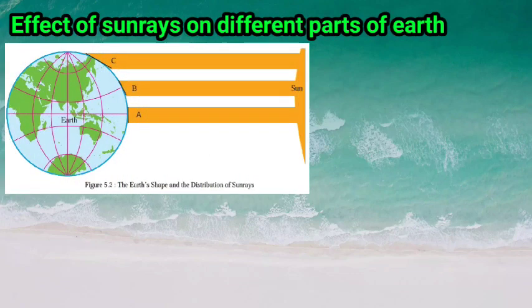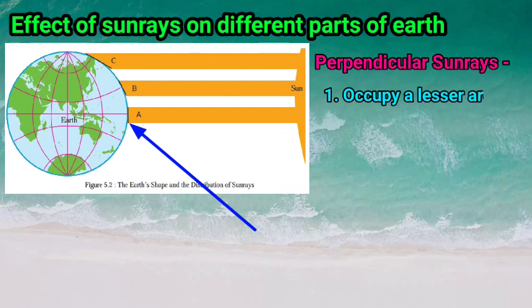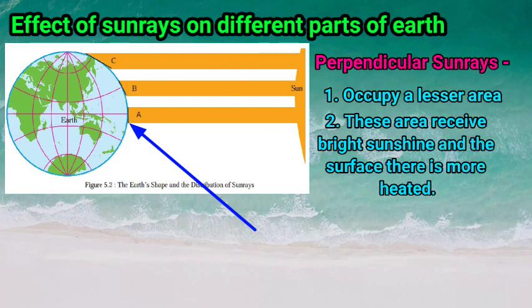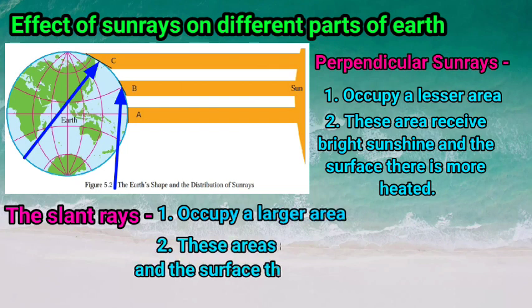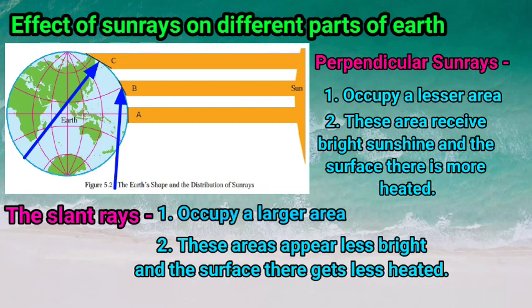The perpendicular Sun rays occupy a lesser area of the Earth. This area receives bright sunshine, the surface there is more heated, and thus the air near the surface becomes hotter. Whereas slant rays of the Sun occupy a larger area of the Earth. Such areas appear less bright, the surface there gets less heated, and the air near the surface is also less hot.